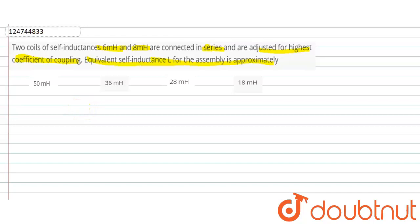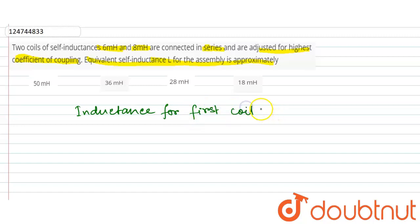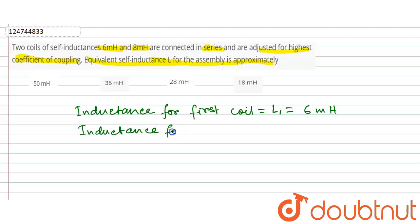Inductance for the first coil is equal to L1. L1 is 6 millihenry, because it is 6 millihenry. Inductance for the second coil, L2, is 8 millihenry.